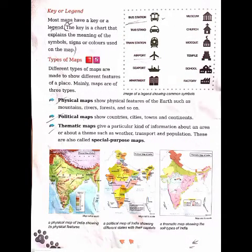The next part is the key or legend. Most maps have a key or legend. The key or legend is used on a map to identify the symbols, signs, or different types of colors which are used on a map. That is why we use a key or legend — to identify the symbols, signs, and colors.